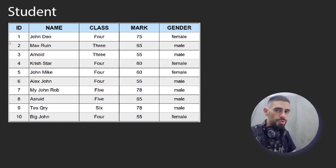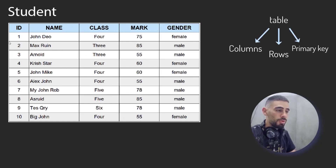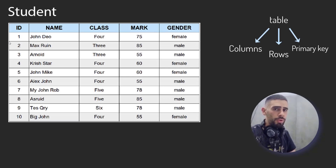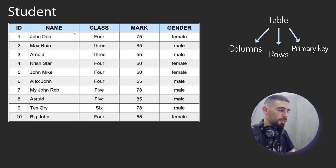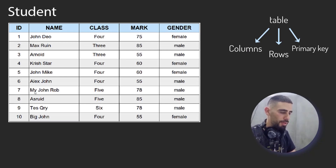That was all for this video. Now you know the basics about databases — that databases consist of tables, and tables have columns, rows, and a primary key. We will continue in the next video where I will show you how you can get and manipulate these values — for example, how to insert a new student into your table, how to search for a student, and how to delete, update, and perform all these operations.